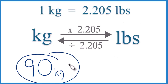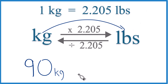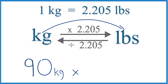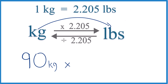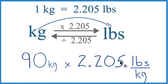We have 90 kilograms and we want pounds. For kilograms to pounds, we're going to multiply by that 2.205 number, like this — 2.205 pounds per kilogram. That comes from our conversion factor.